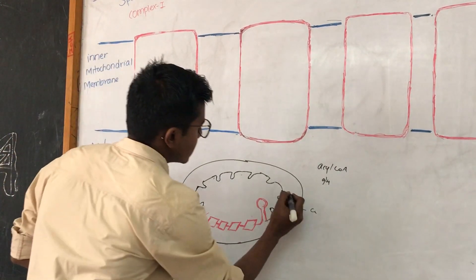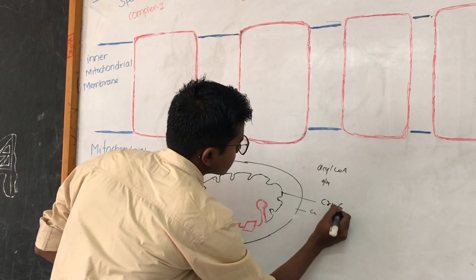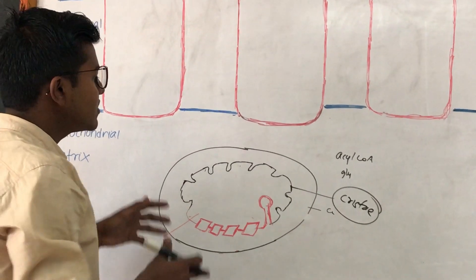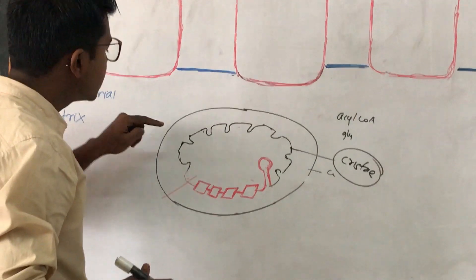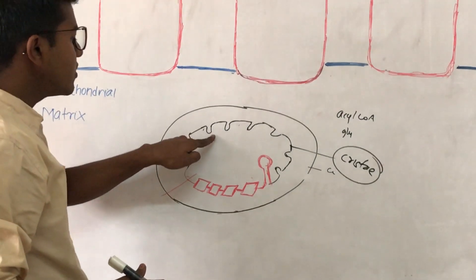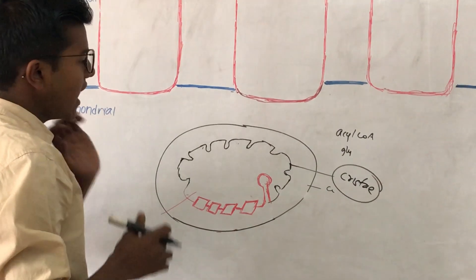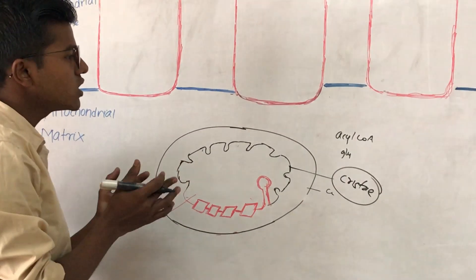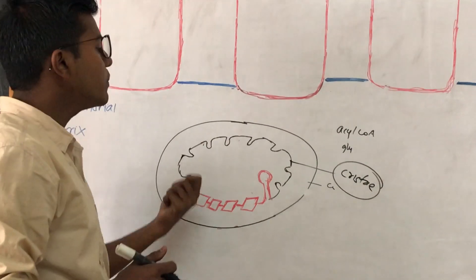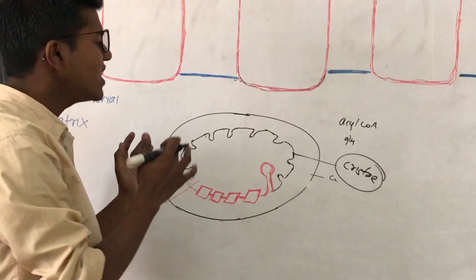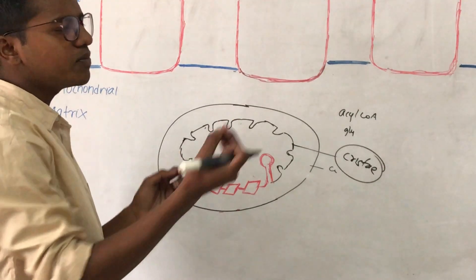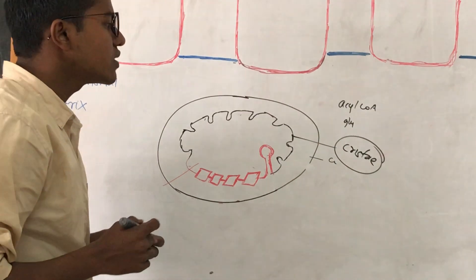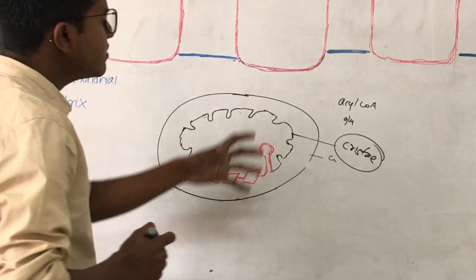We are mainly concerned with the various enzymes that are associated with the outer membrane, intermembranous space, inner mitochondrial membrane, and the mitochondrial matrix. The outer membrane is permeable to most enzymes and metabolites, but the inner membrane is selectively permeable — permeable to only some metabolites and impermeable to hydrogen ions.